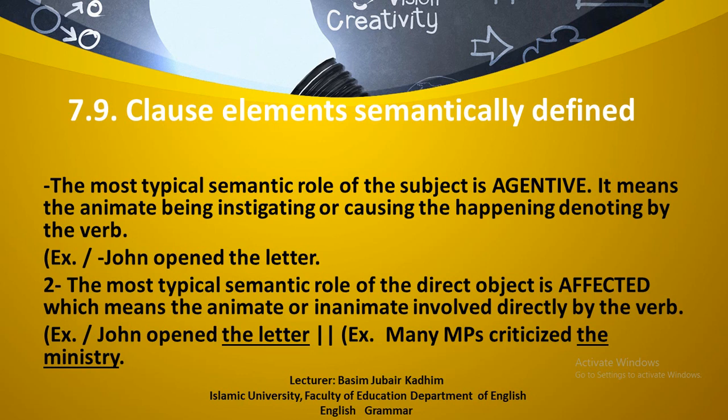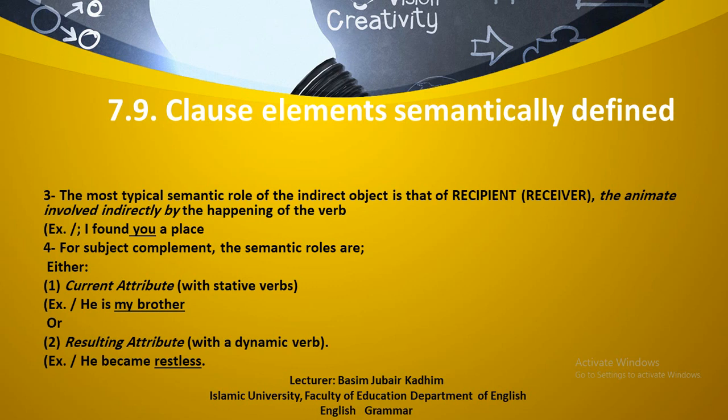There must be other roles, but the most typical ones are agentive for the subject and affected for the object. The most typical semantic role for the indirect object is that of recipient or receiver — the animate entity involved indirectly by the happening of the verb. For example, 'I found you a place' — 'you' is the receiver of the action, which is the role of indirect object or recipient.